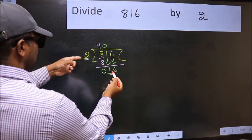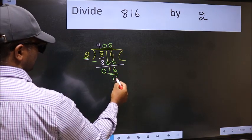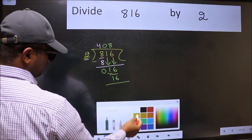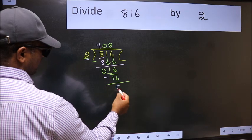When do we get 16 in the 2 table? 2 8s 16. Now we should subtract. We get 0.